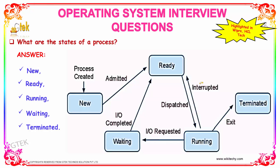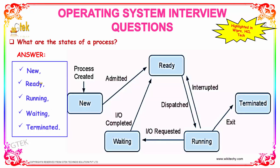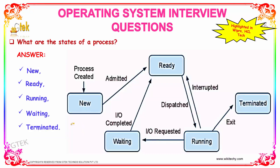What are the states of a process? The states of a process include the following: new, ready, running, waiting, and terminated. So these are the states of a process.